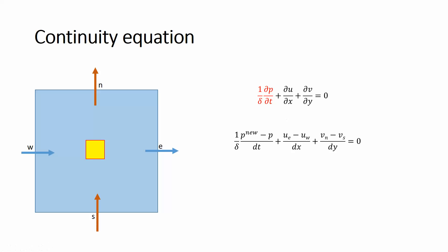For the continuity equation, the pressure time derivative is (p_new − p_old) / (β·dt), where β is a constant parameter you can set. ∂u/∂x is (u_E − u_W) / dx and ∂v/∂y is (v_N − v_S) / dy. You can use either the current time-step velocities or the just-updated velocities from the momentum equations — using updated velocities converges faster. The convergence criterion is typically when the divergence of velocity reaches zero.